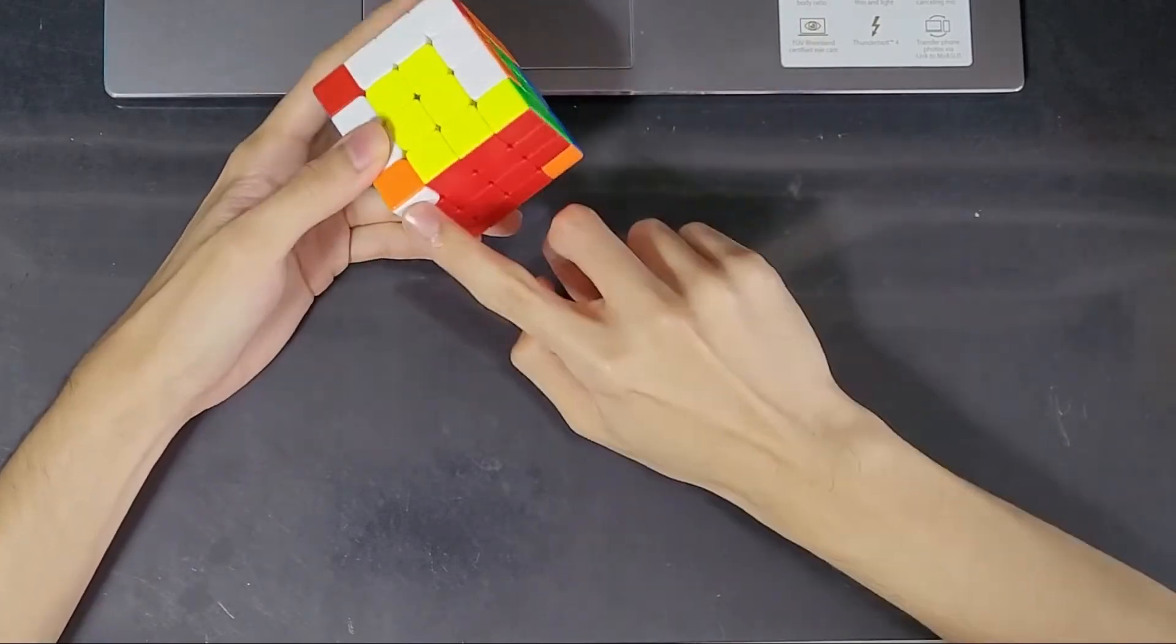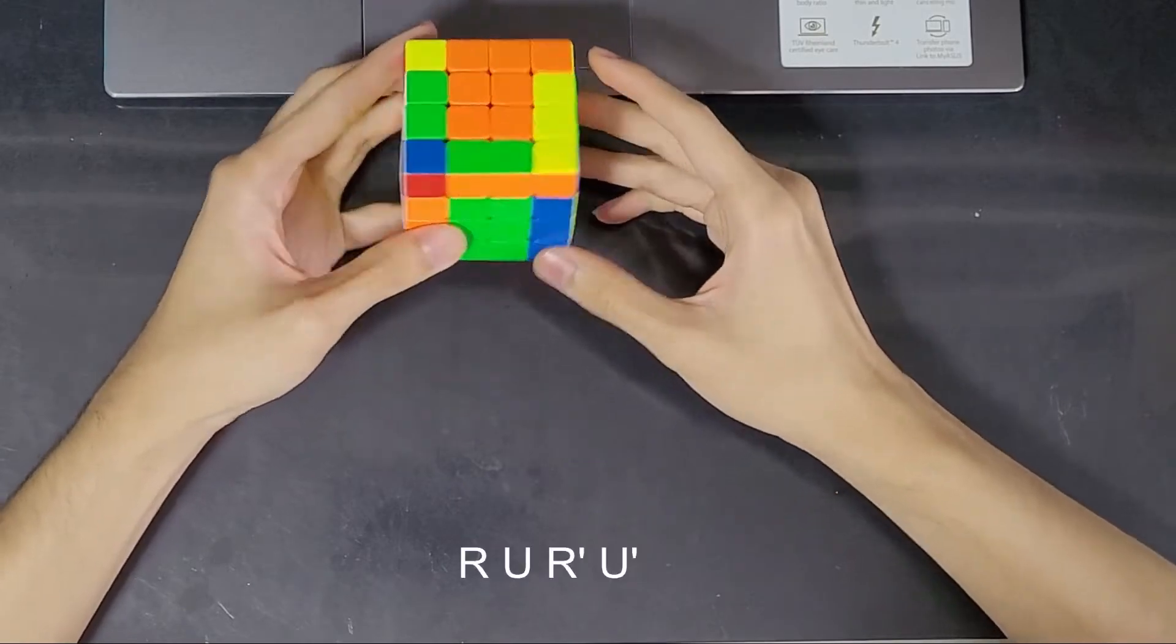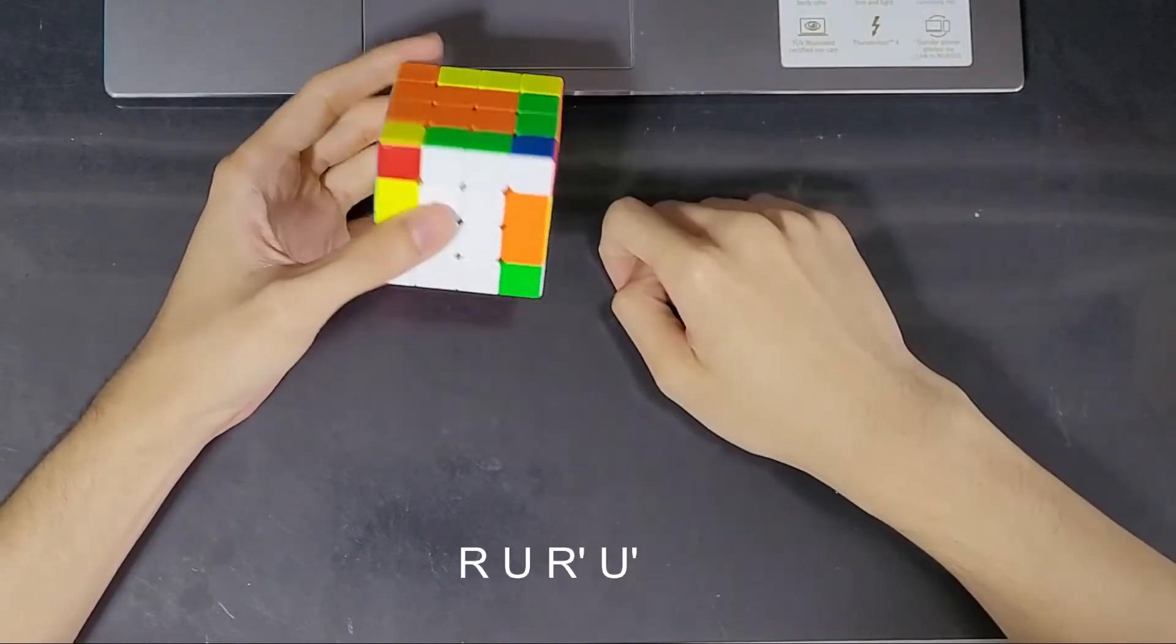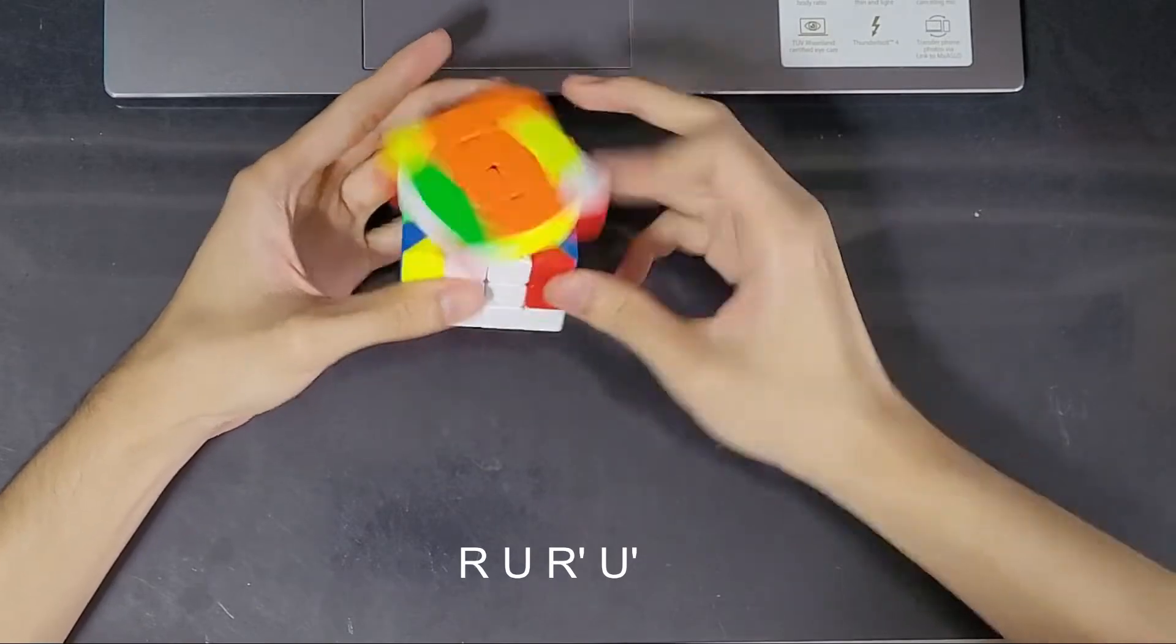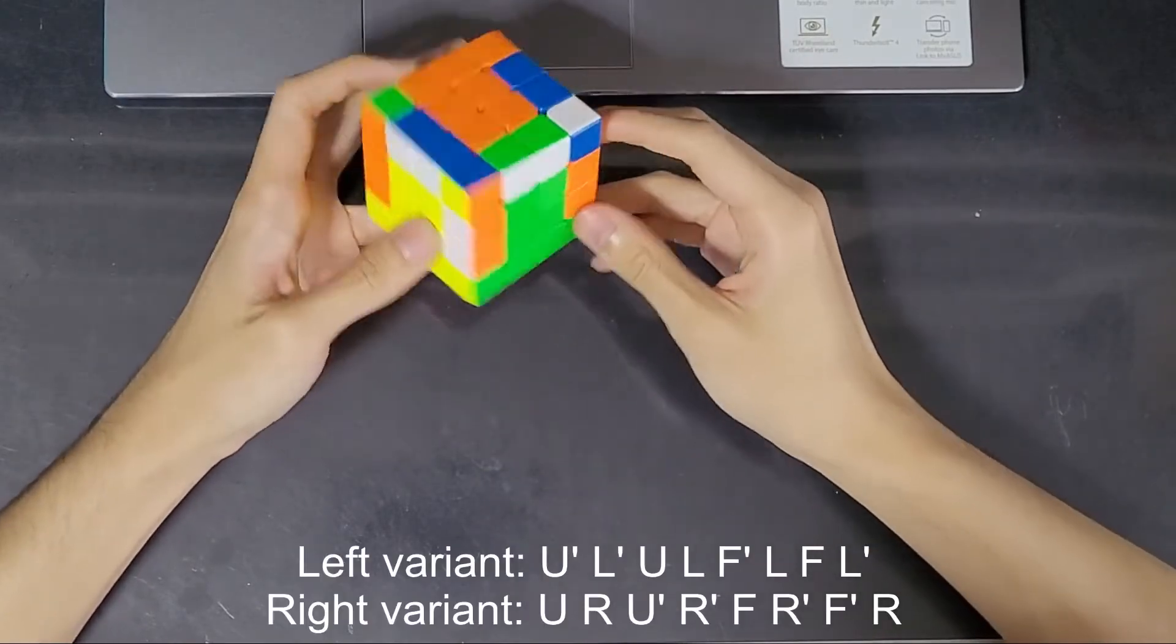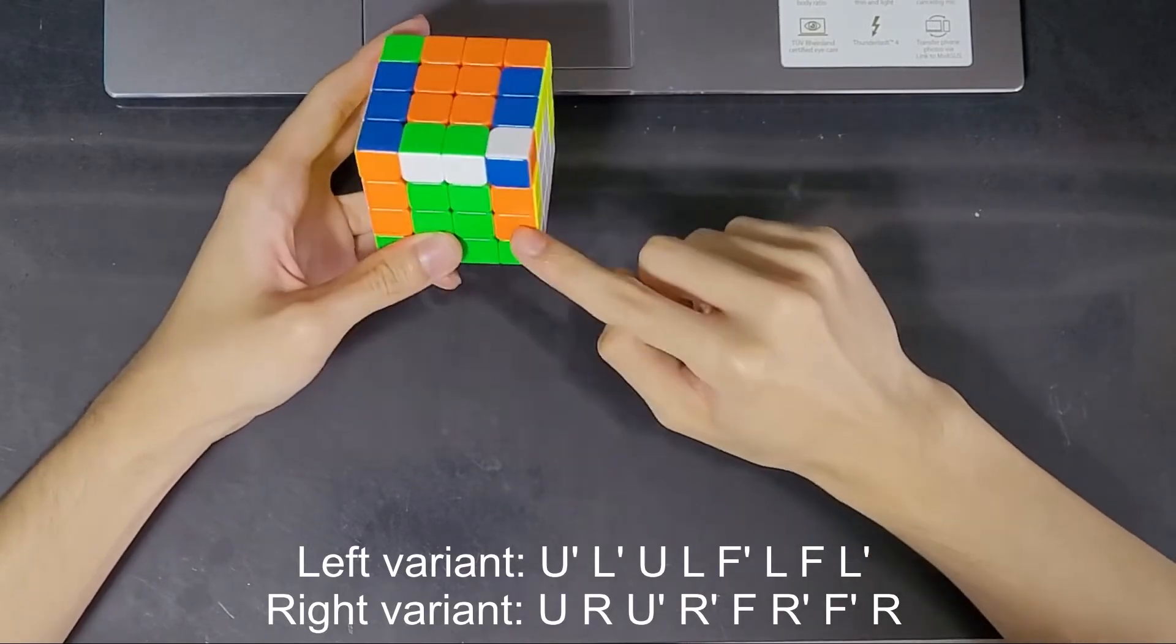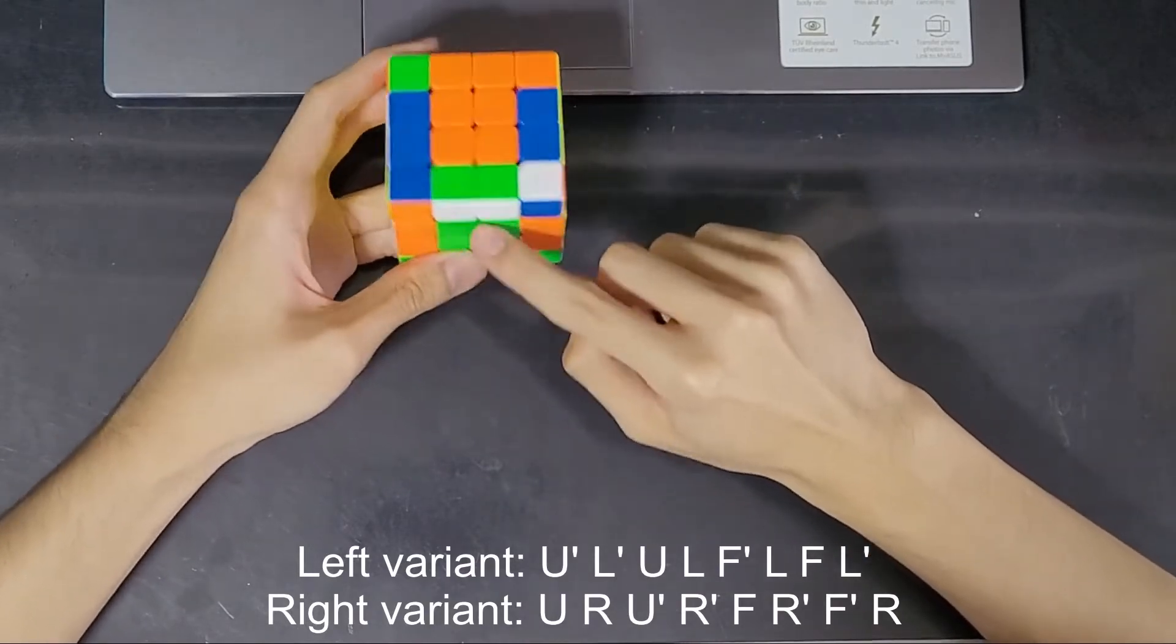The second step is to insert all 4 corners. For this step we'll put the corner above the spot it requires, and just do this algorithm as many times as necessary. The next step will be to take these edges that belong to the middle layer and insert them where they belong. So in this case green and white will belong down here.